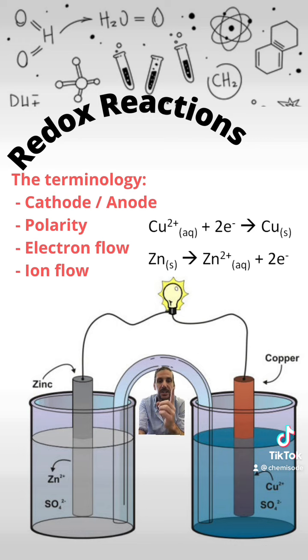So our salt bridge is made up of two ions, a positive and negative ion. The reason we have this is so we can balance out where these electrons are going. Now as we said, electrons are moving towards the cathode, so that means the positive ion in my salt bridge must flow towards my cathode.